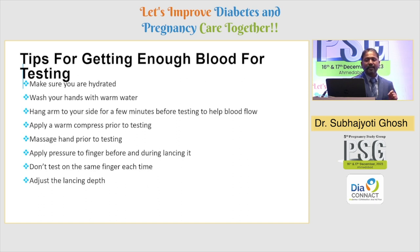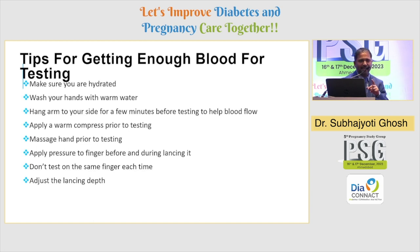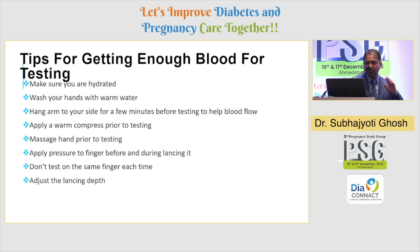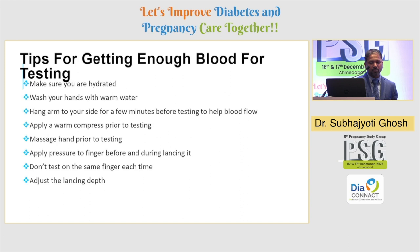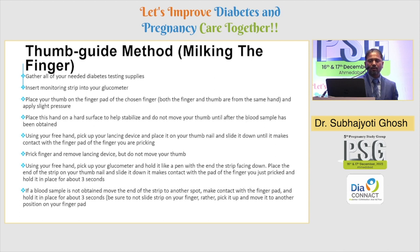The practical challenge is how to get enough blood for testing, because patients often say a family member doesn't bleed enough when pricked. The technique is: make sure you are hydrated, wash your hands with warm water, hang your arm at your side for a few minutes before testing to help blood flow, apply warm compression prior to testing, massage the hand prior to testing, apply pressure to the finger before using the lancing aid, don't test on the same finger each time, and adjust the lancing depth. There is also the milking-in-harm method, which uses two fingers.